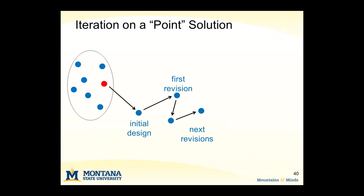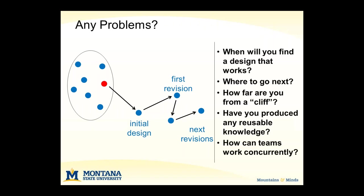One way to characterize that is that you're moving from point to point in the design space, which we call a point-to-point search for the solution. This can cause all kinds of problems because it's really difficult to know when you actually converge and where to go next. Oftentimes you don't produce knowledge that's useful for another project, and it's really difficult for teams to work concurrently because the process is unpredictable and a change in one part of the system can precipitate changes elsewhere.